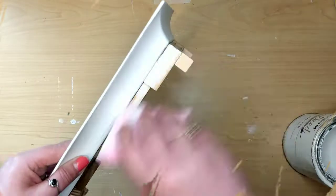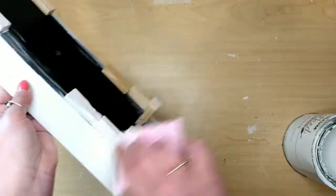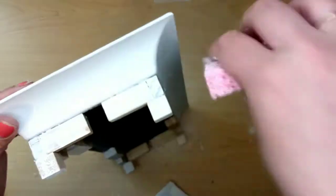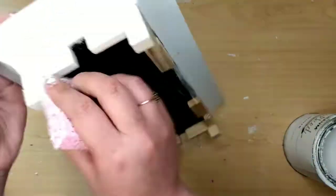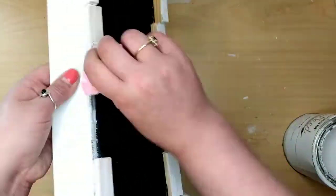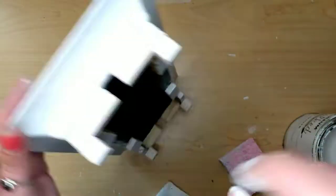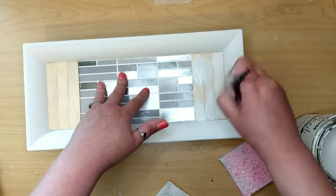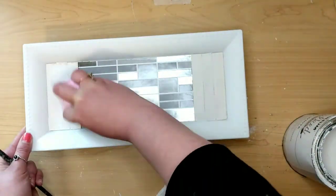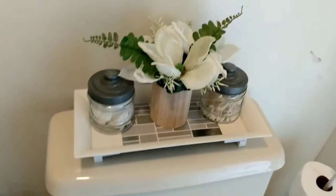I decided to do a whitewash look to them because it was just too sudden of a change from the stark white to the wood. So I just took my linen white chalk paint and painted it on, and immediately took my sponge and sort of smeared it around, wiped some of it off. So it's like doing a whitewash without the mess of using water. I really liked how it turned out, and I did put a little extra paint in those cracks to just sort of fill them in a bit.